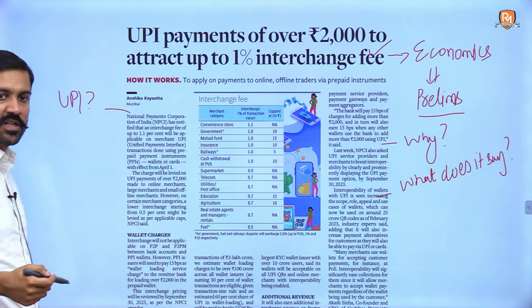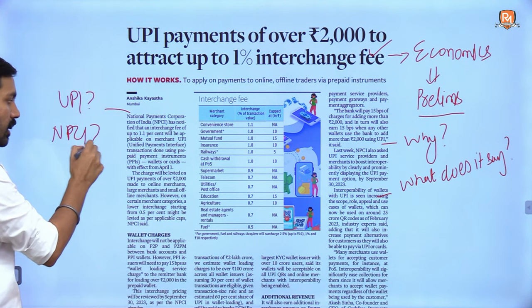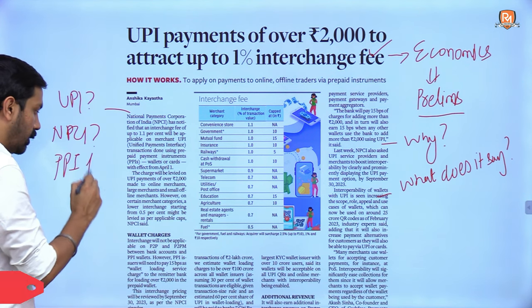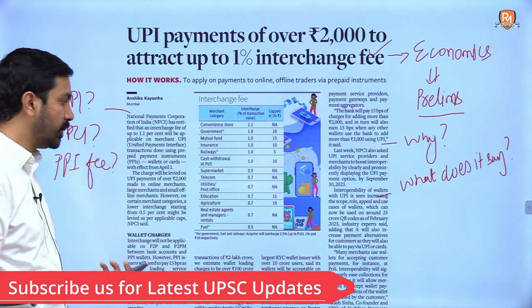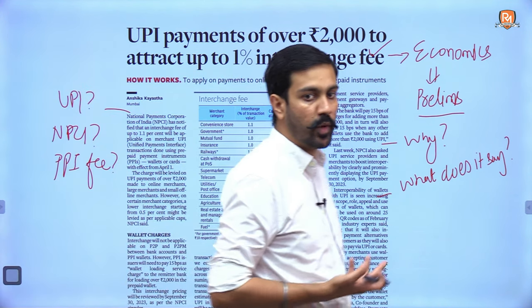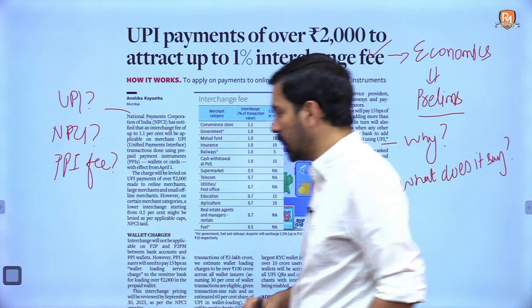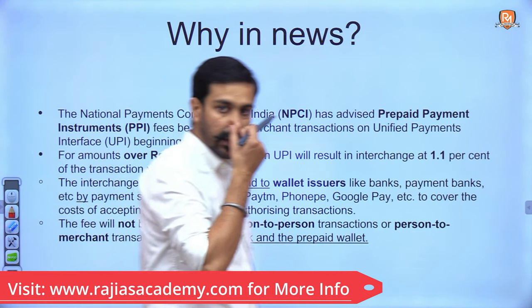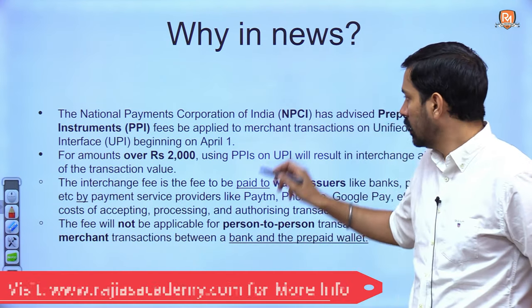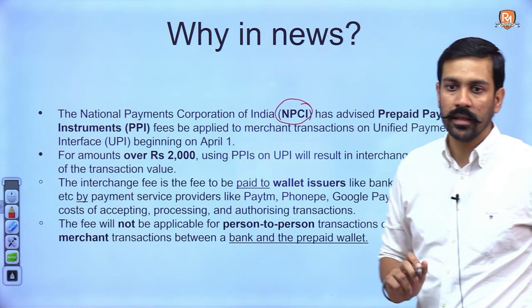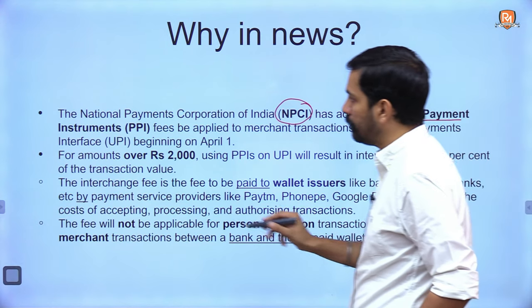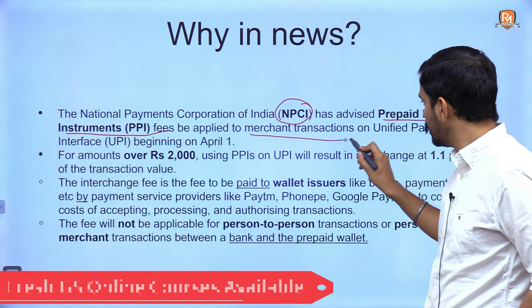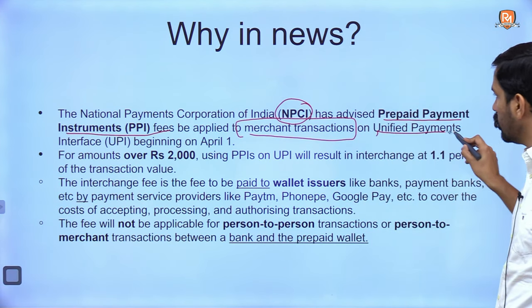What is UPI? A notification has been issued by NPCI — what is that? The interchange fee that has been levied is called the PPI fee. We will also discuss whether it will be beneficial or a disadvantage. The news states that an agency called NPCI has advised prepaid payment instruments fees to be applied on merchant transactions on UPI.